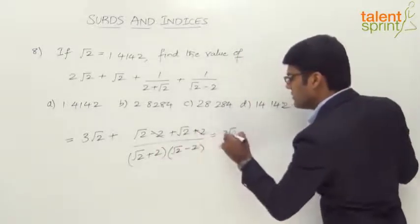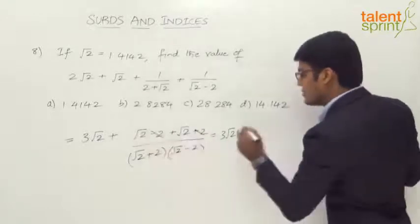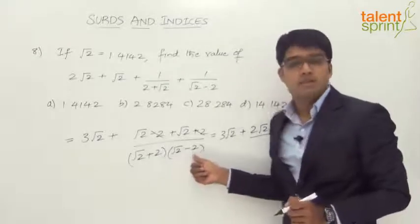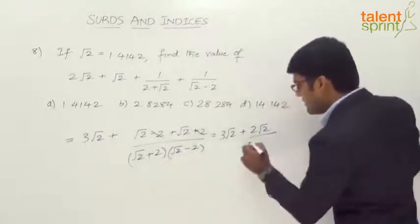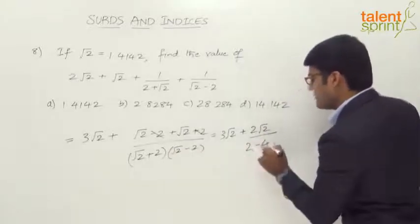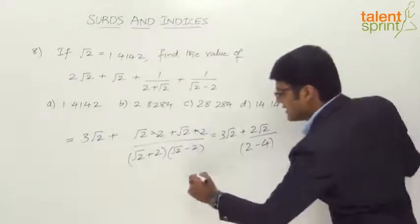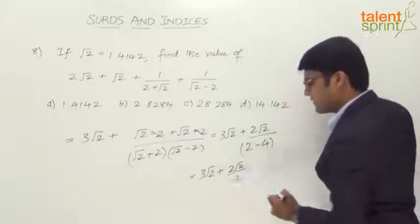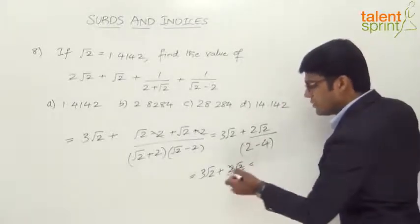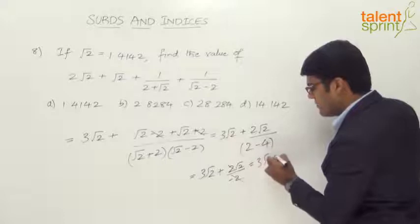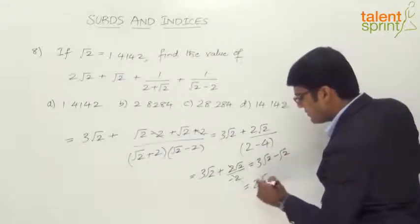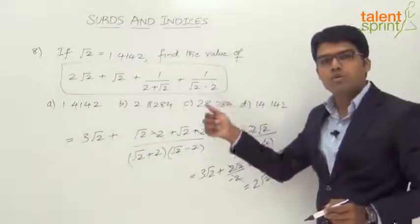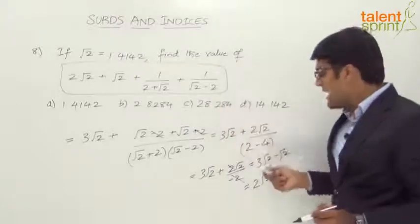Simplifying the numerator: −2 and +2 cancel out, leaving √2 + √2 = 2√2. The denominator is a² − b² = (√2)² − 2² = 2 − 4 = −2. So the combined fraction equals 2√2 / (−2) = −√2. Adding to the first term: 3√2 + (−√2) = 2√2. The entire expression simplifies to 2√2.